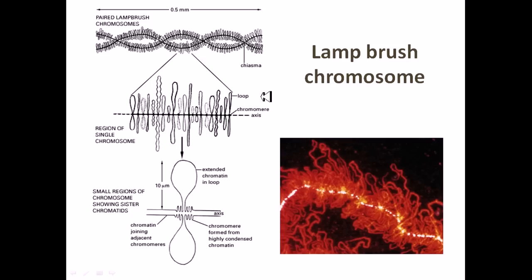Lampbrush chromosomes are a kind of giant chromosome, also called polytene chromosomes, which are found in the developing oocytes of some animals including birds, snakes, insects, amphibians, reptiles, and other types of animals. They were discovered by Ruckert in 1892.